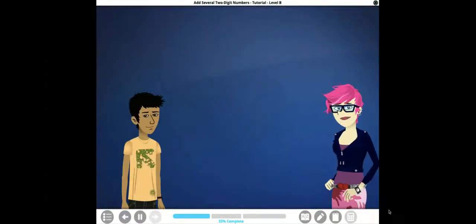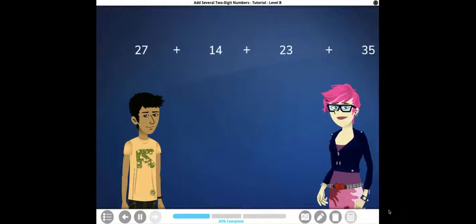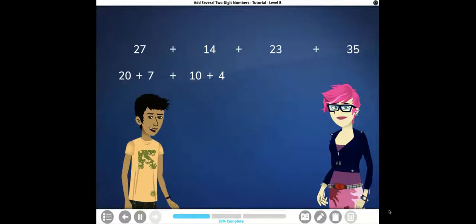Let's do this together. I need to add 27, 14, 23, and 35. Let's write each number in expanded form. I'll get you started. 27 written in expanded form is 20 plus 7. 14 written in expanded form is 10 plus 4. Let me help with the other numbers.